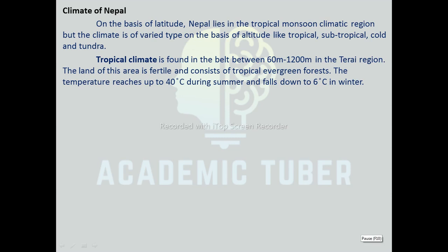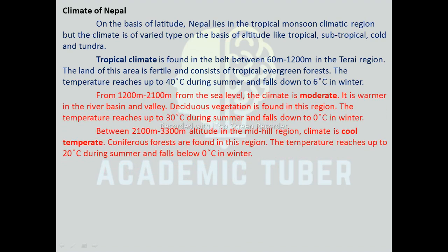Now we are going to discuss the climate of Nepal. On the basis of latitude, Nepal lies in the tropical monsoon climatic region. But the climate is of varied types on the basis of altitude: tropical, subtropical, cold, and tundra. Tropical climate is found between 60 meters to 1200 meters in the Terai region. The land is fertile and consists of tropical evergreen forest. Temperature reaches up to 40 degrees Celsius in summer and falls to 6 degrees Celsius in winter. From 1200 meters to 2100 meters, the climate is moderate, warmer in river basins and valleys, with deciduous vegetation. Temperature reaches up to 30 degrees Celsius in summer and falls to 0 degrees Celsius in winter. Between 2100 meters to 3300 meters in the mid-hill region, the climate is cool temperate and coniferous forests are found.